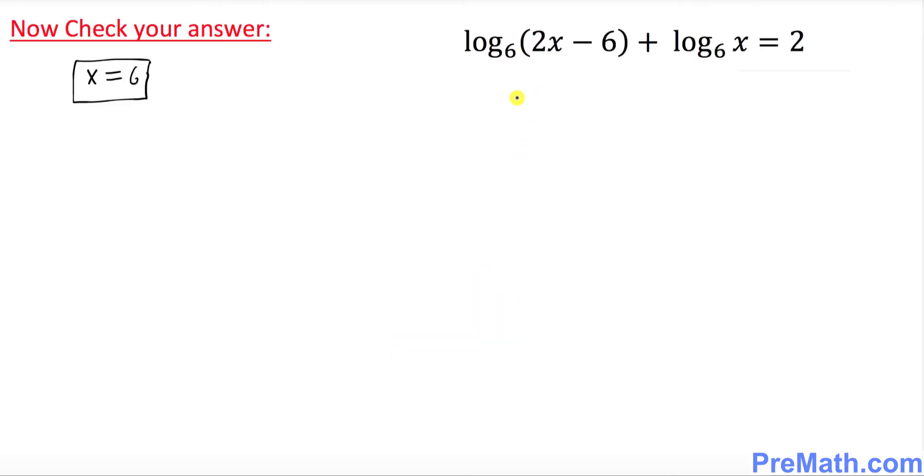And now we want to check our answer for any extraneous solution. So wherever you see x in this original equation, replace x equals to 6. We want to check it out first. x equal to 6. So this becomes log of 2 times 6 minus 6 with base 6 plus log of 6 with base 6.